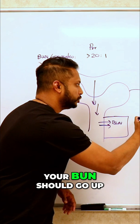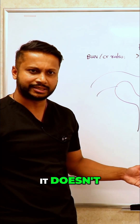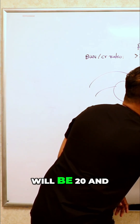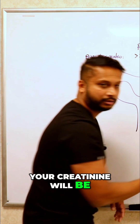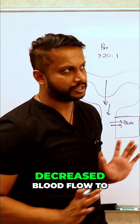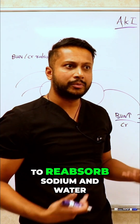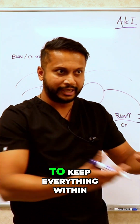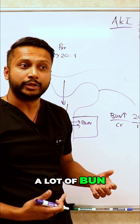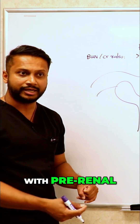So your BUN should go up. But what about creatinine — should it get reabsorbed? It doesn't. And therefore, your BUN will be 20 and your creatinine will be 1. Because there's low flow — if you have decreased blood flow to your kidney, the kidney's job is to reabsorb sodium and water to keep everything within the body. Just like that, it's also going to reabsorb a lot of BUN. That is why your BUN is going to go up in a patient with pre-renal.